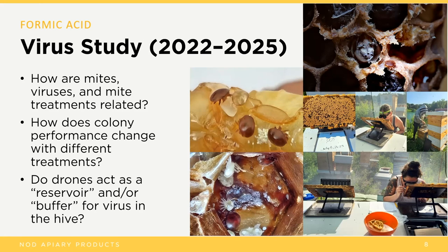We know that varroa preferentially target drones — they preferentially parasitize drone brood and also drone adults. But what happens later in the season when colonies stop producing drones? What happens to all those varroa, and what happens to all the virus that's in those varroa? They have to shift somewhere, so they shift over to the workers. It's at that point that we typically see the expressed version of deformed wing virus. In the fall we see a higher incidence of deformed wing virus, and that's also when we see colonies collapsing.